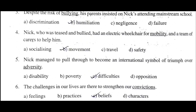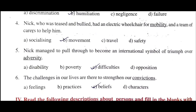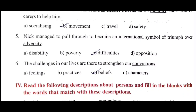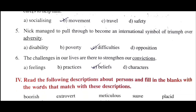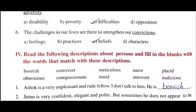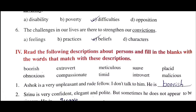Fourth sentence: 'Nick, who was teased and bullied, had an electric wheelchair for mobility and a team of carers to help him.' Fifth sentence: 'Nick managed to pull through to become an international symbol of a triumph over adversity.' Adversity means difficulties - C is the right answer. Sixth sentence: 'The challenges in our lives are there to strengthen our convictions.' Convictions means beliefs - the answer is C.